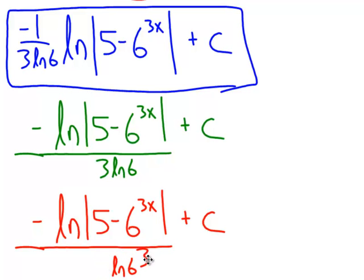And, maybe they'll take the 3 in front of the natural log in the denominator and use the log property to put that 3 back, put that 3 up in the exponent. At which time, instead of writing 6 to the 3rd, you might see 216 instead, which is, of course, 6 to the 3rd power.